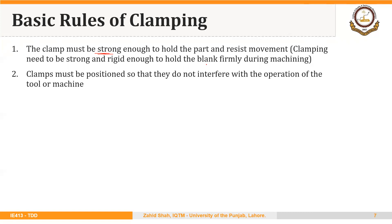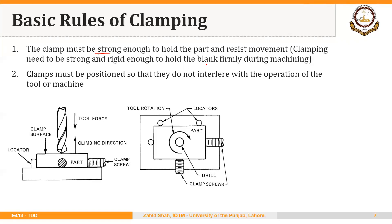Secondly, clamps must be positioned so that they do not interfere with the operation of the tool or machine. For example, in a drilling operation the drilling force will be downward, and there will be a reactive force in the opposite direction that will tend to pull the part out of the jig or fixture. Also, because of the rotational movement of the drill, the part will have a tendency to rotate as well. So the position of the clamping element and the clamping force should be strong enough so that the part doesn't move in either of these directions. In this case we are using a screw clamp to make sure the part doesn't pull out of the jig or fixture and doesn't rotate either.